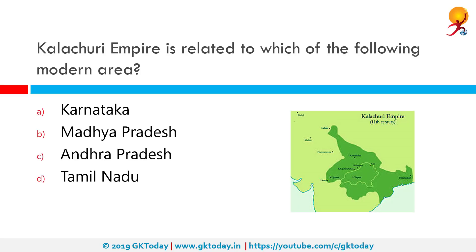Kalachuri Empire is related to which of the following modern areas? The correct answer is Madhya Pradesh. The Kalachuris were an Indian dynasty that ruled in West Central India between the 6th and 7th century.